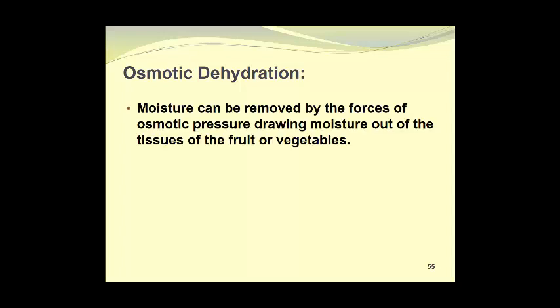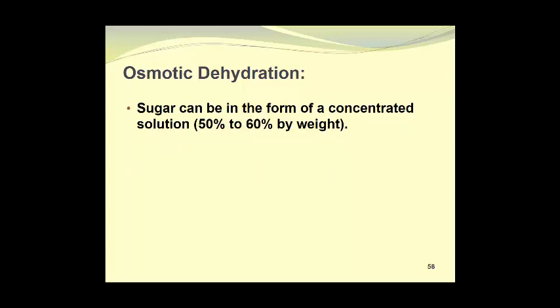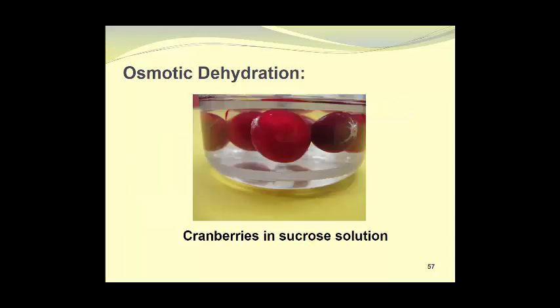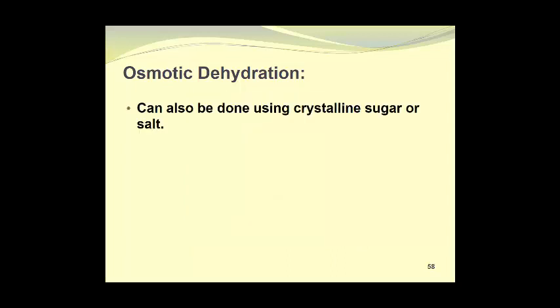Osmotic dehydration is another interesting type of water removal system. Moisture can be removed by the forces of osmotic pressure, drawing moisture out of the tissues of the fruit or vegetables. This is often done using sugar or salt. Sugar can be in the form of a concentrated solution, usually 50% to 60% by weight. Solutions may be heated to about 50 degrees to speed the process, and this is different than using hot air to evaporate moisture. In this case, heating speeds diffusion of moisture. Here we see some cranberries in a sucrose solution, going through the process of osmotic dehydration.